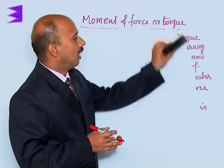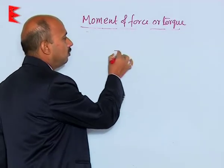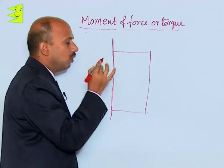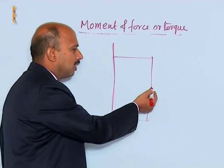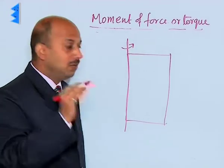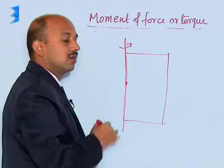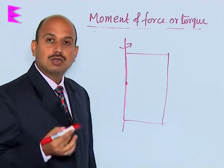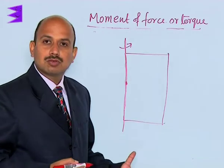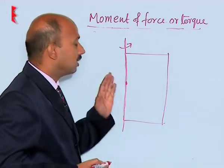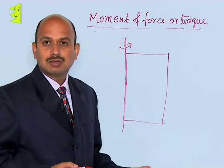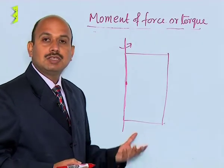Consider a door where one side is fixed. When you apply force at the outer edge, the door rotates about that axis. But when you apply force at the point where it is hinged, the door does not rotate. So why does the door rotate when force is applied at the outer edge? It means there is something beyond just the force — something else which is causing the rotation.